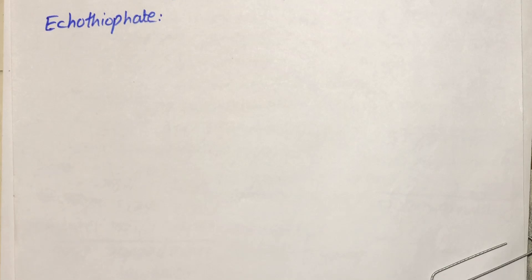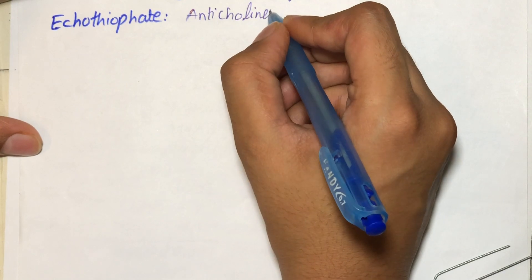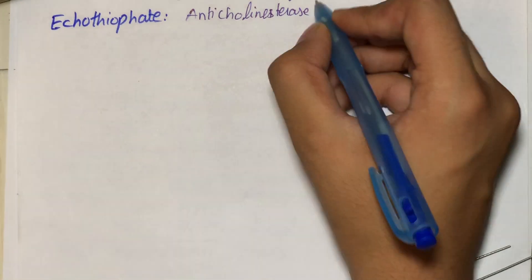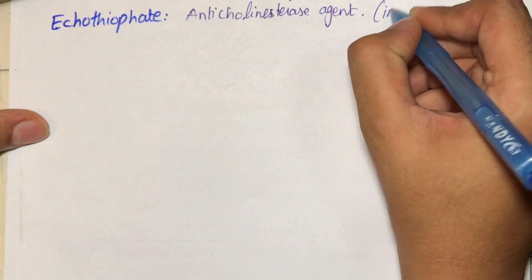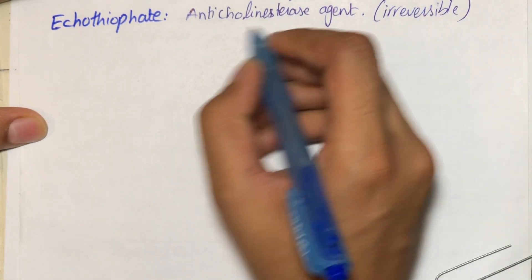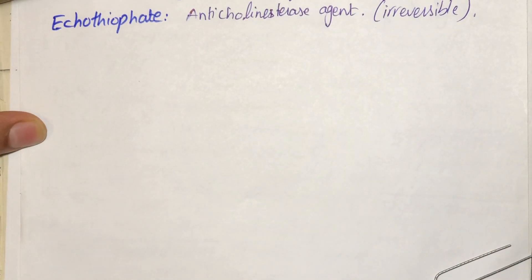In today's video we will be learning about echothiophate, which is actually an anti-cholinesterase agent. It is an irreversible anti-cholinesterase agent, and how it actually works is that it increases the cholinergic effect in the neurons.